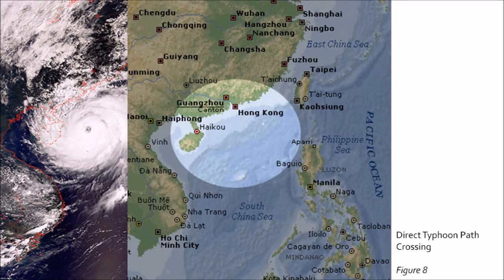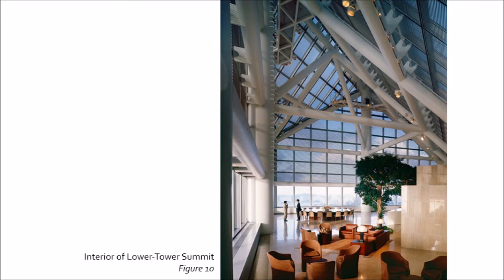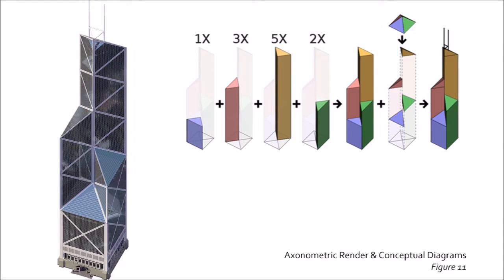As the area is prone to typhoons, the design of the building needed to strongly consider an innovative method to hold up a 70-story tall building in such harsh conditions. The steel and concrete structure, covered in reflective glass, is comprised of four triangular vertical shafts that extrude from a square base at different heights.